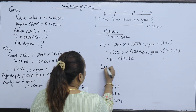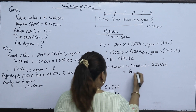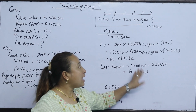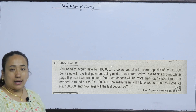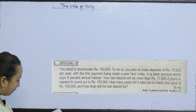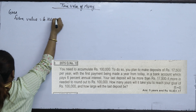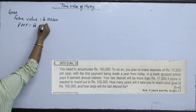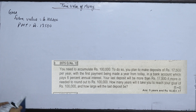Then we take the last deposit — there is some difference. The last deposit is 1,10,608, and using the 6th year value, the total accumulates to 10 lakhs. You need to accumulate rupees 1 lakh, with the first payment being made a year from today in a bank account which pays 6% annual interest.